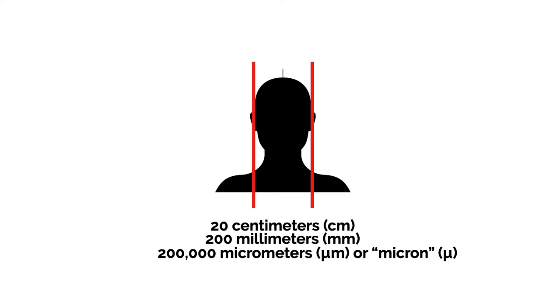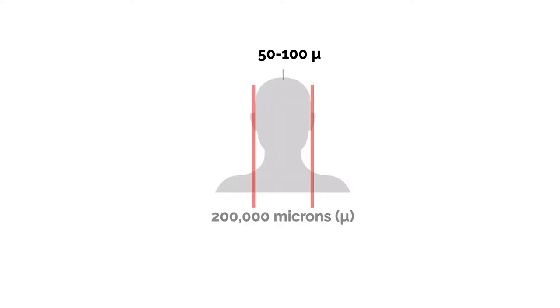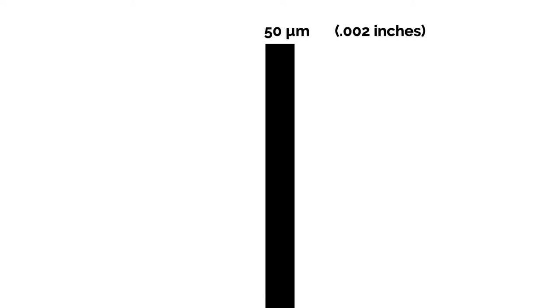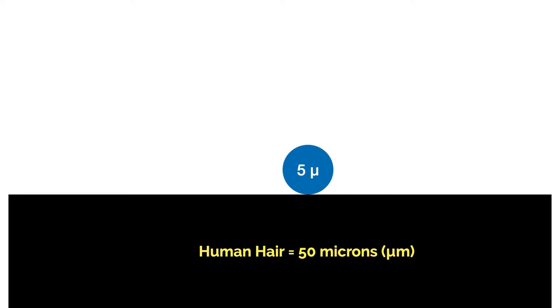Conventionally, we call the micrometer the micron — micrometer and micron are the same thing. Now let's look at the hair on that head. There's a hair on top of a 200,000 micron head; it's about 50 to 100 microns. There's your 50 micron hair — it's about 0.002 inches. We're using this to show the relative size of a droplet. A typical droplet that would come out of the nose or mouth when you're sneezing, coughing, or even speaking might be about 5 microns in size.